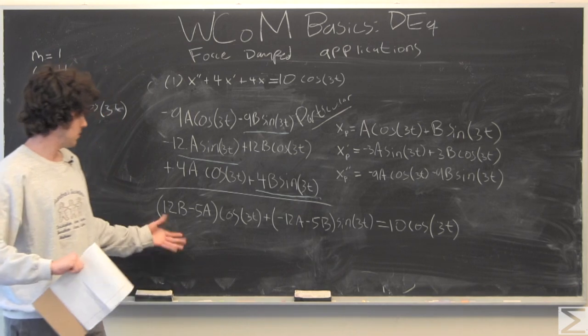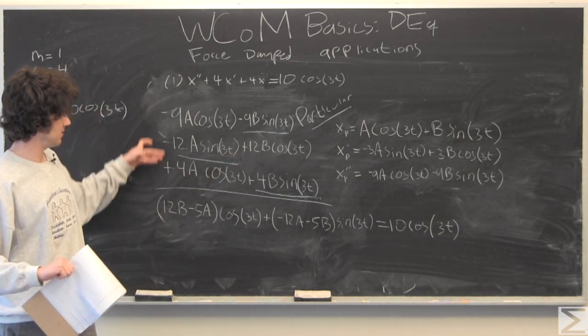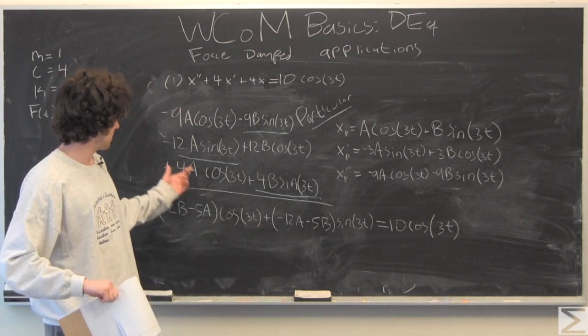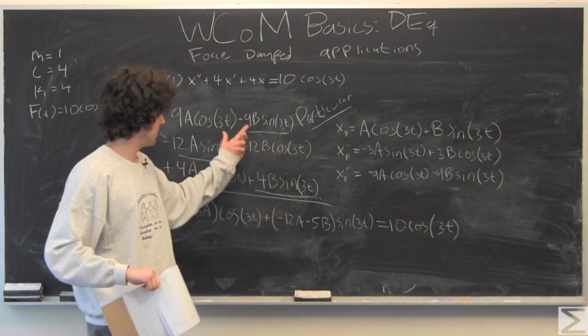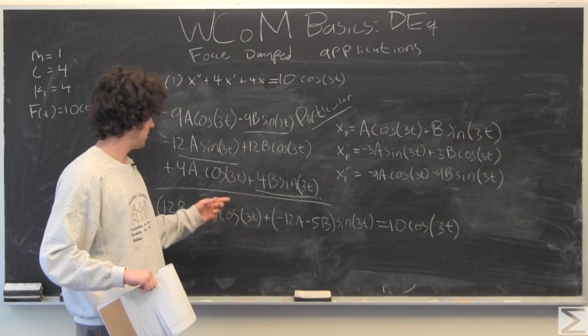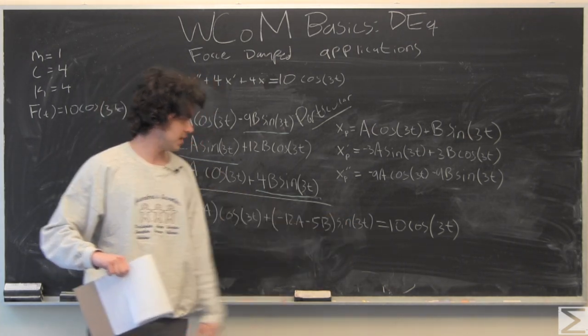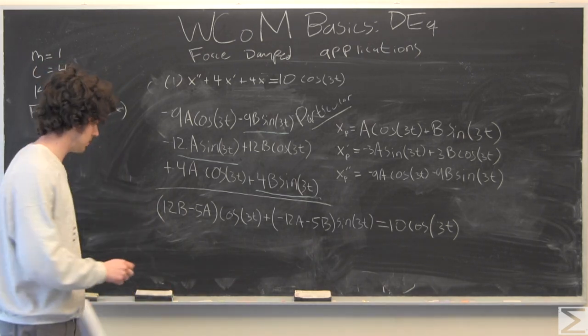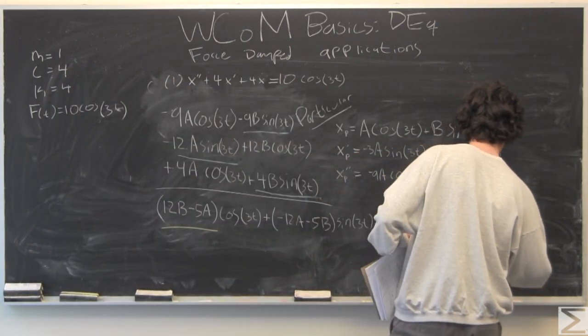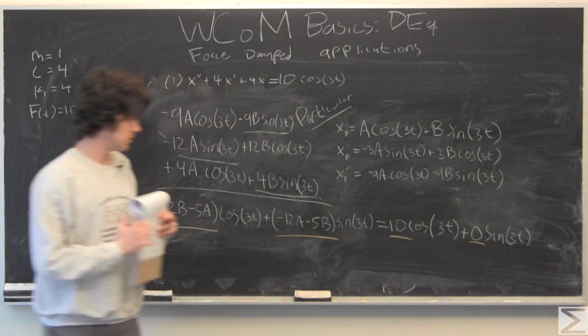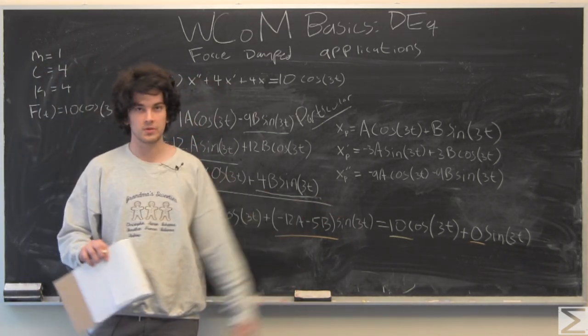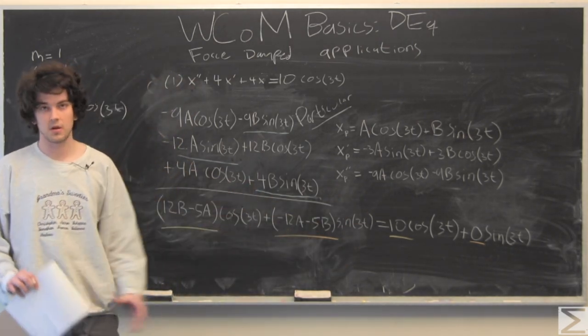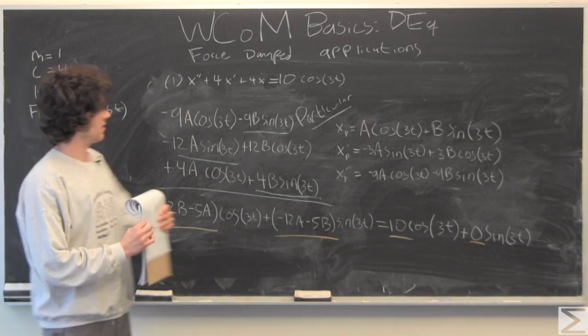So we have 12b here minus negative 9a plus 4a is minus 5a cosine 3t, and then we have negative 12a here, and then minus 9b plus 4b is negative 5b times sine of 3t equal to cosine of 3t. What we're going to do is just match up the coefficients, so this cosine part is going to be equal to that cosine coefficient, and this sine part is going to be equal to 0 because there's no sine part in our f of t.